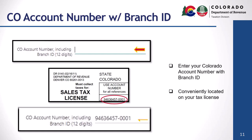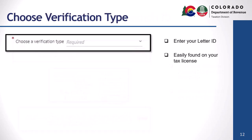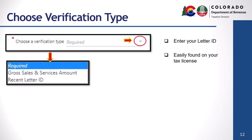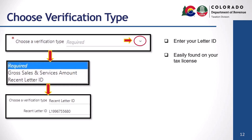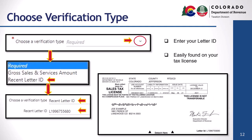Next you'll enter your verification type. Choose your verification type by clicking the drop-down arrow next to "Choose a Verification Type." Select the verification type you wish to use to set up your Revenue Online access from the drop-down menu and enter the information. Verification types will vary based on the tax type selected. In this example, we've selected recent letter ID. You can easily locate your letter ID on your tax license, as shown here.